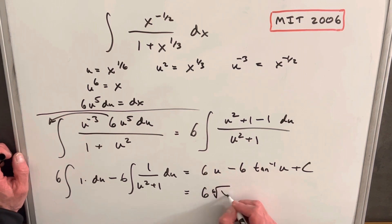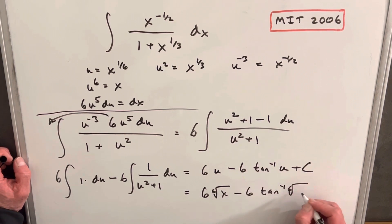So our final answer is going to be 6. I guess I'll write it as a 6th root, should I? Yeah, let's do it that way. Minus 6, tan inverse, 6th root of x plus c, and we're done.